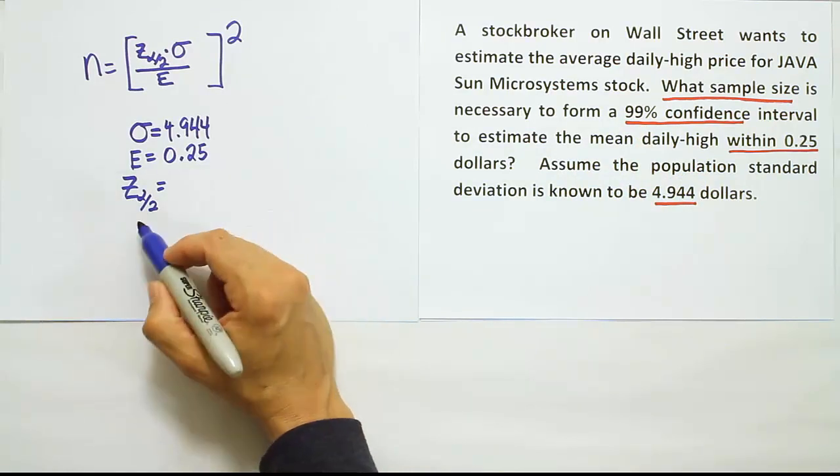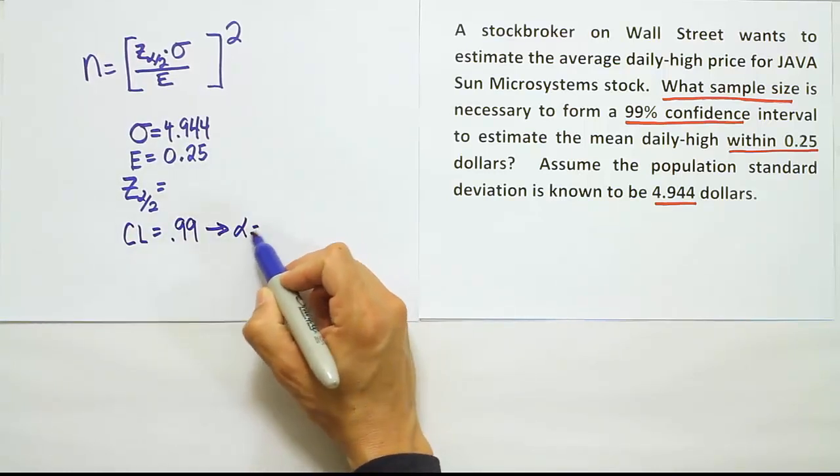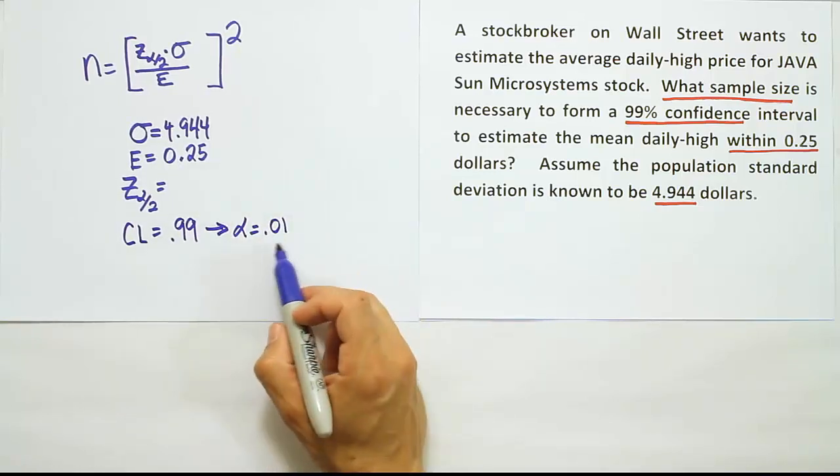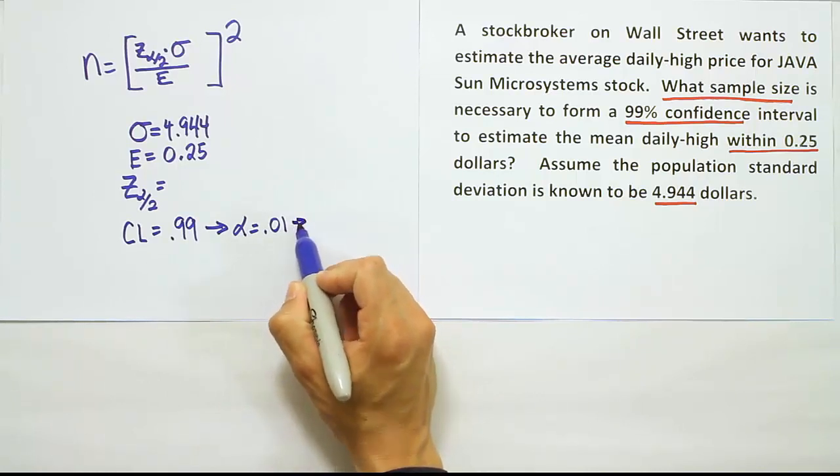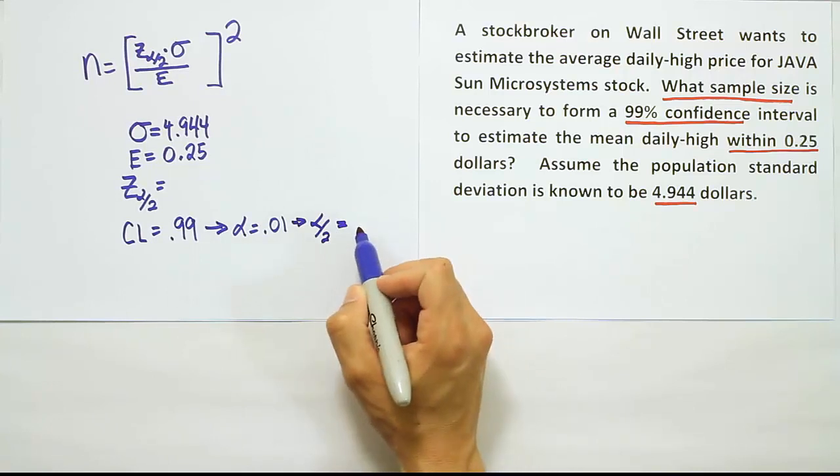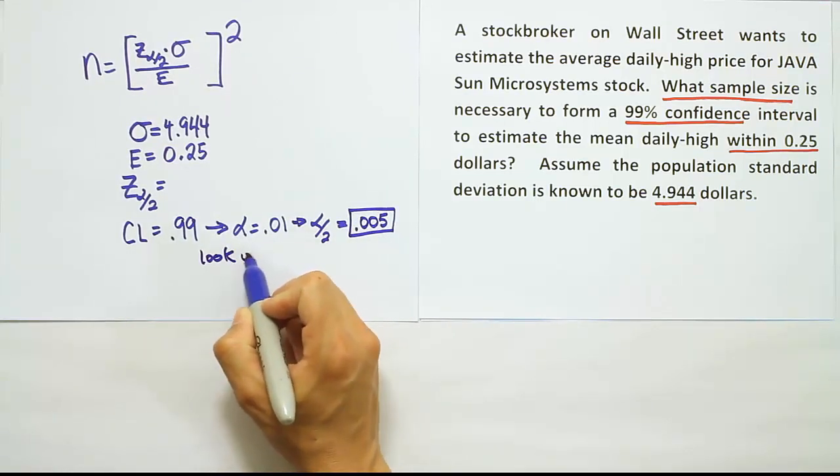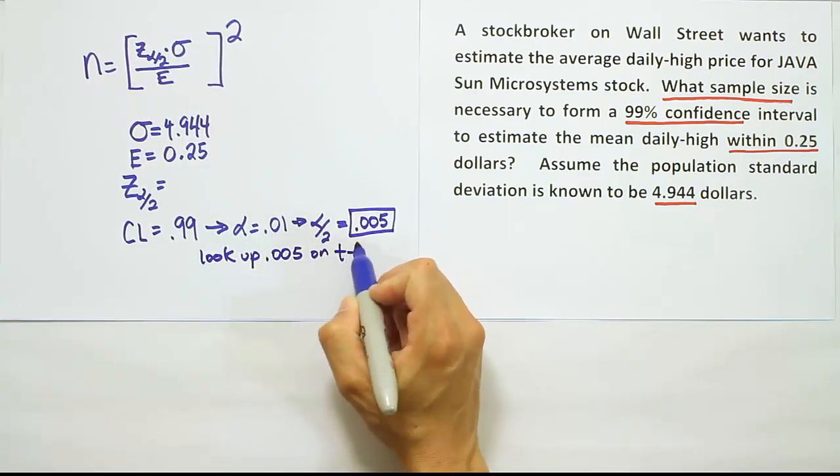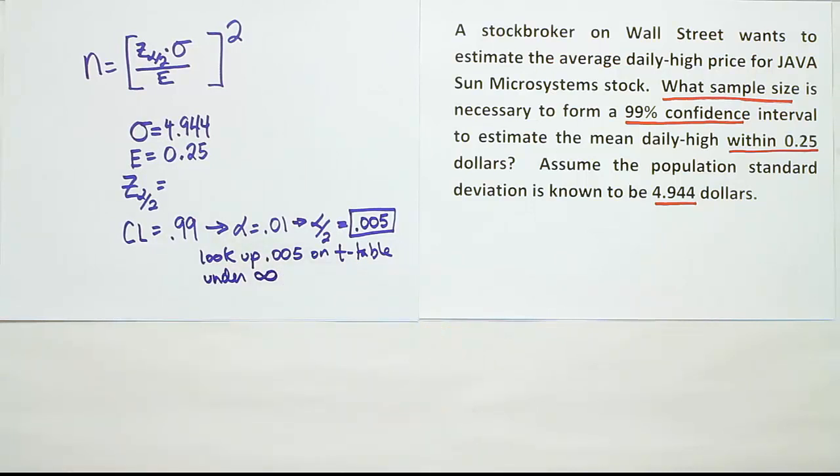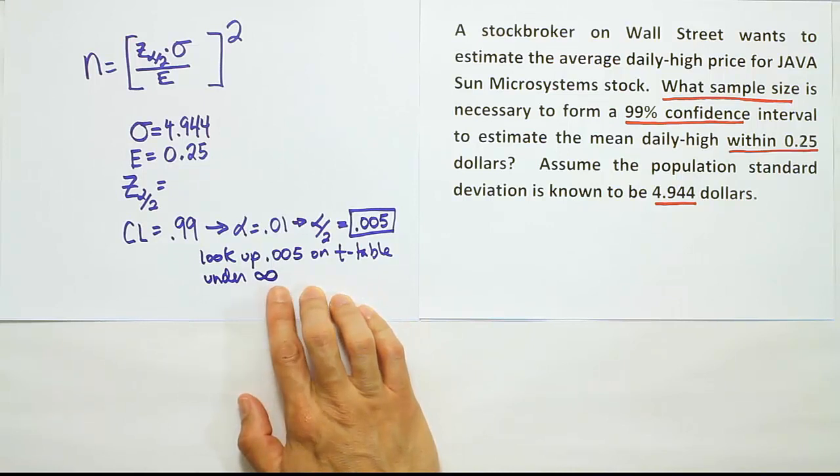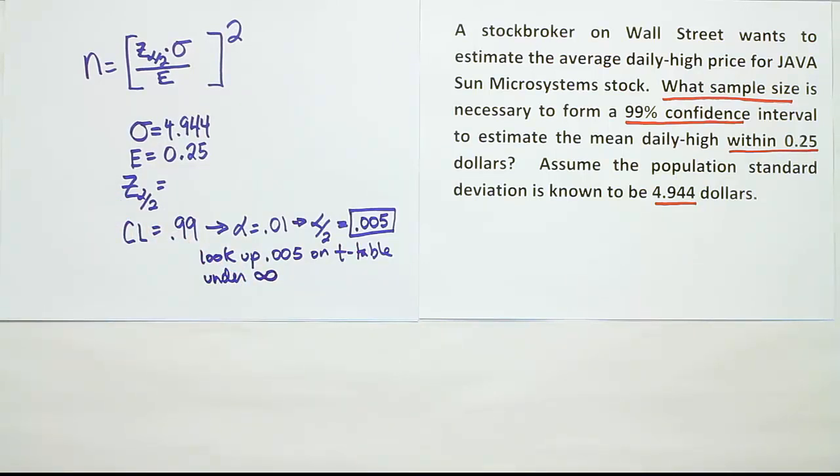So that's what we're going to do now. We're going to first figure out what alpha is, we're going to divide it in half, and we're going to look it up on the t-table. If our confidence level is 99%, let's start with the fact that the confidence level as a decimal is 0.99. That will lead to the idea that the alpha level is 0.01. If you have 99% confidence, you have 1% significance, because the two of them add up to 100% always. Then, of course, that leads to the idea that alpha over 2 is 0.005. This number we look up on the t-table.